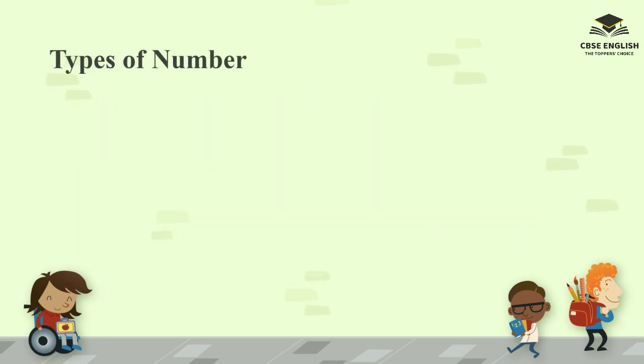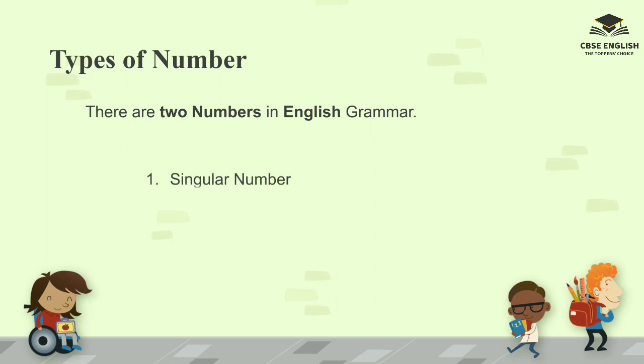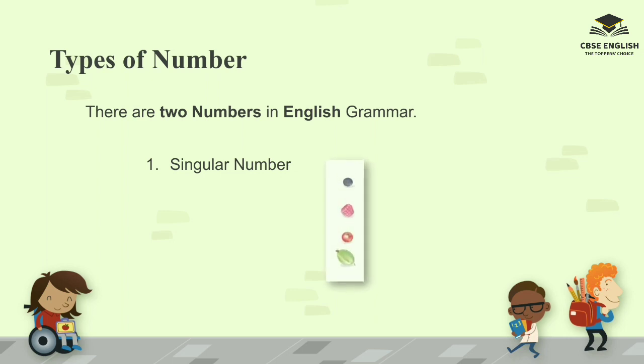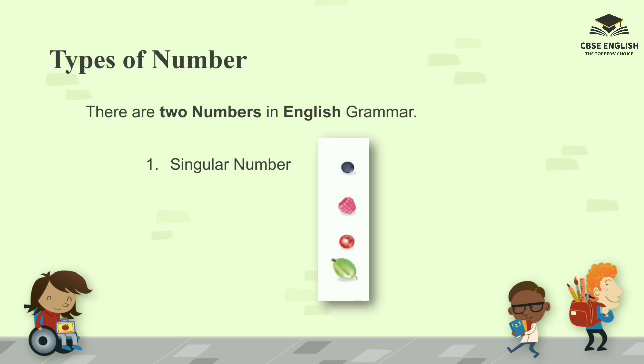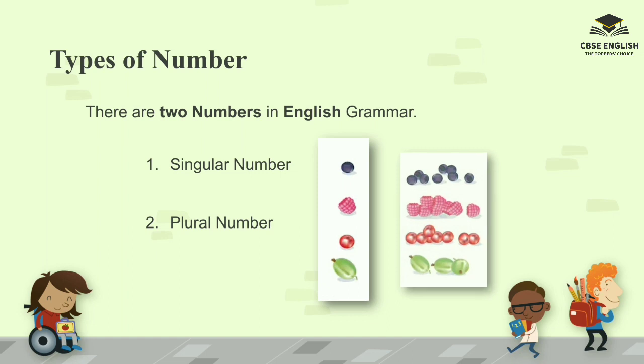Types of number. There are two numbers in English grammar. Number one: singular number. And number two: plural number.